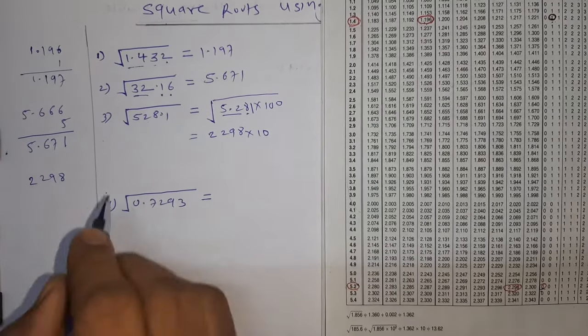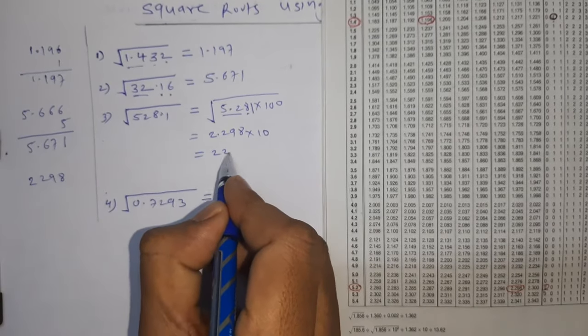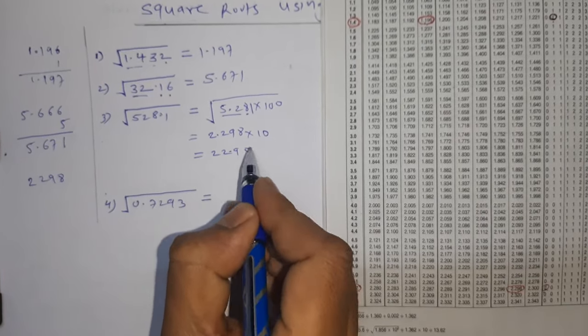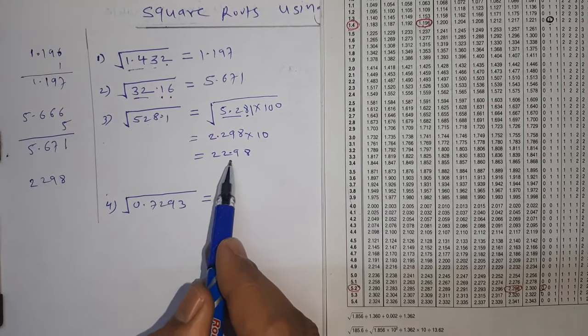If I multiply by 10, I can write 22.98. So square root of 528.1 is 22.98.